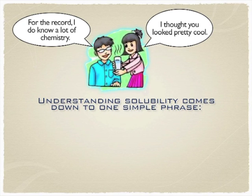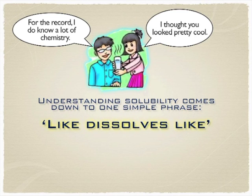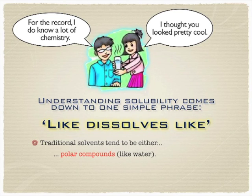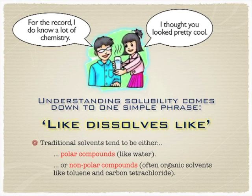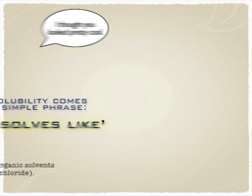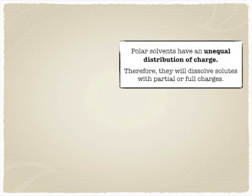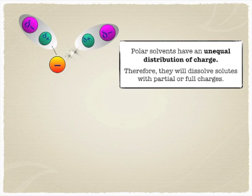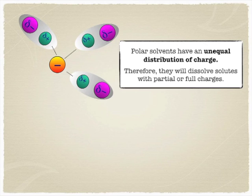It really comes down to remembering the simple idea of 'like dissolves like.' Polar things like other polar things, and non-polar things like non-polar things. Things with partial charges tend to like other things with partial charges. So if you have an unequal distribution of charge — like a polar molecule — you are going to like other things with partial or full distributions of charge. Polar molecules are quite happy interacting with ions, via dipole forces or even hydrogen bonds, depending on the makeup.